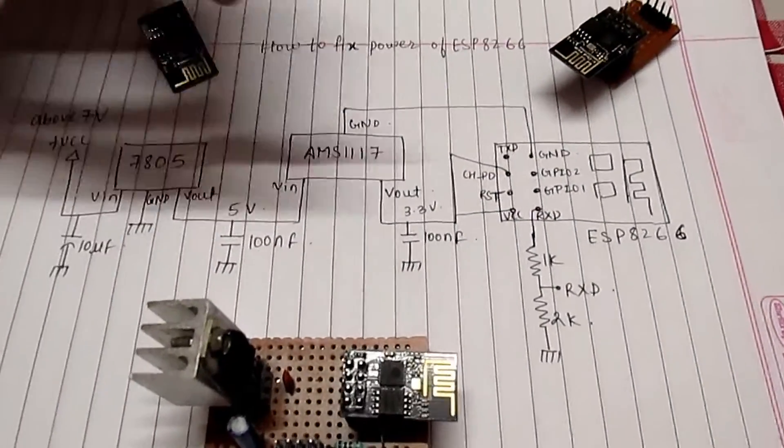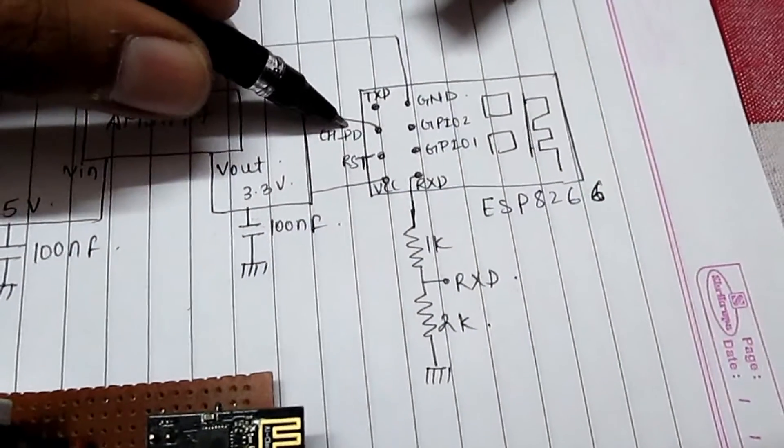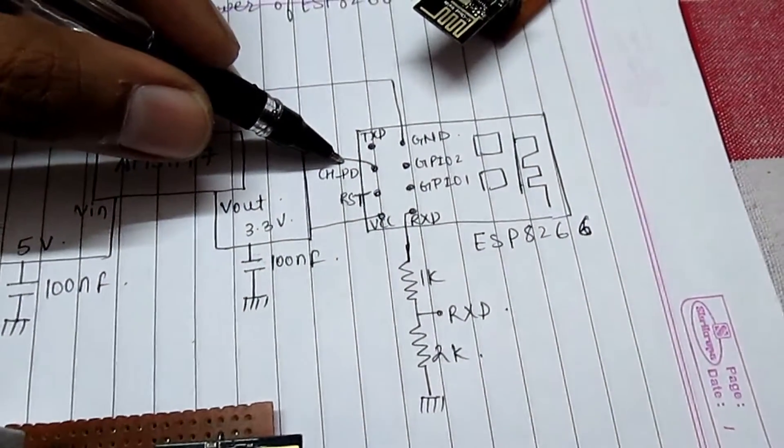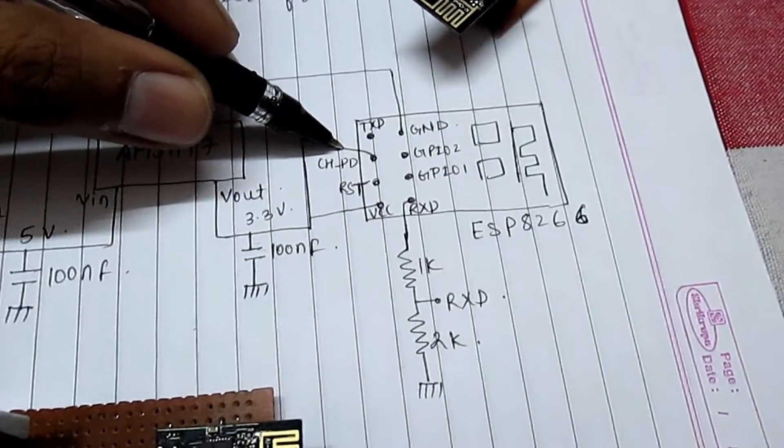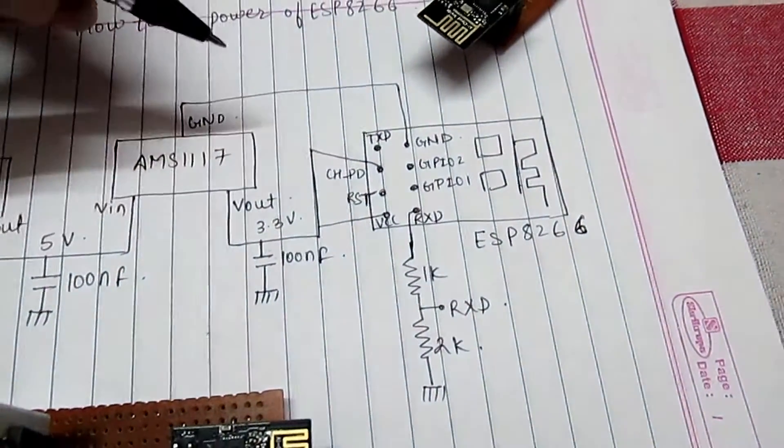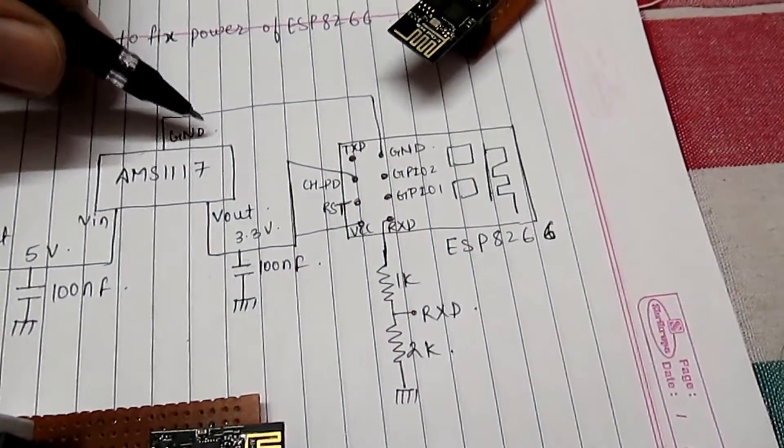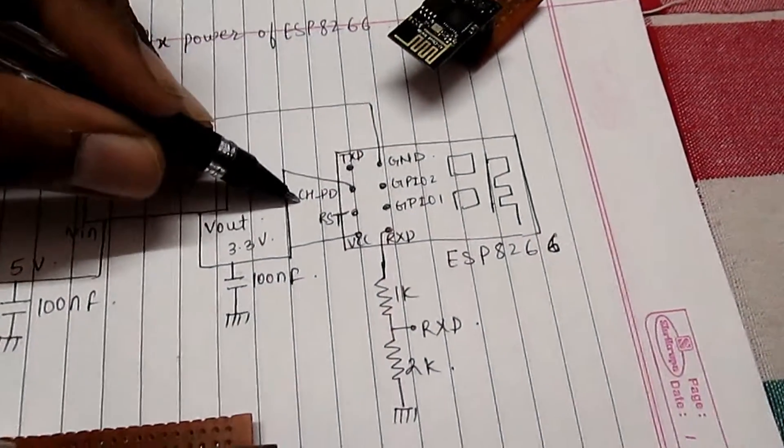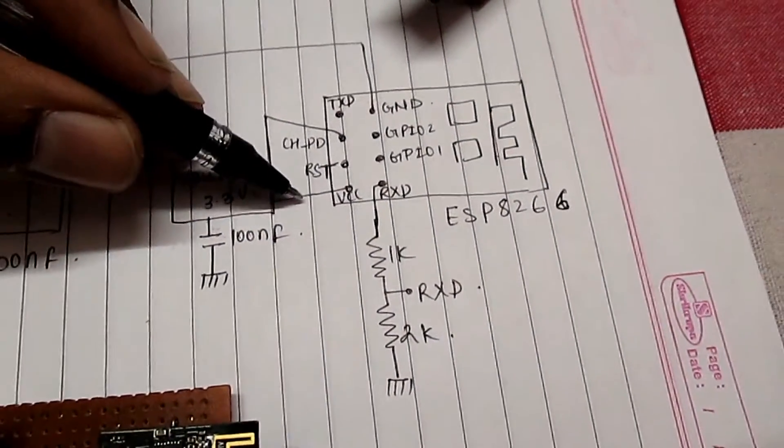Now let's have a look at the circuit diagram. As we all know, ESP8266 requires high current and 3.3 volts. If you are using a battery of 3.3 volts, yes, you can directly connect to the ESP. Just connect chpd pin and vcc pin to the vcc of battery and ground to the ground.